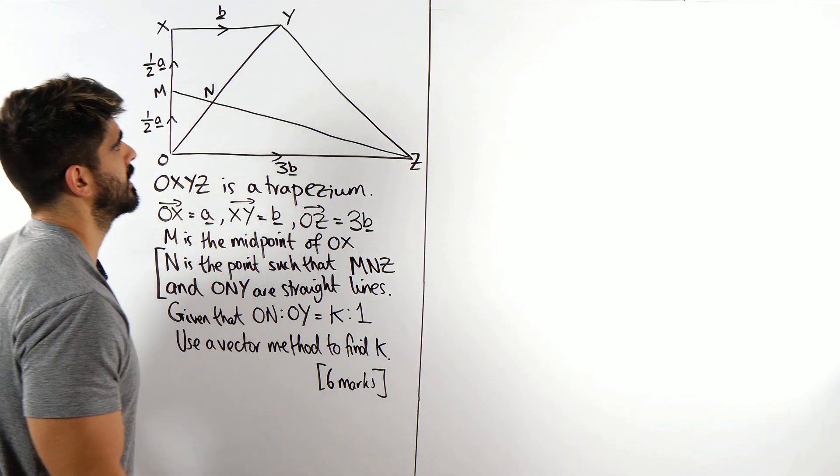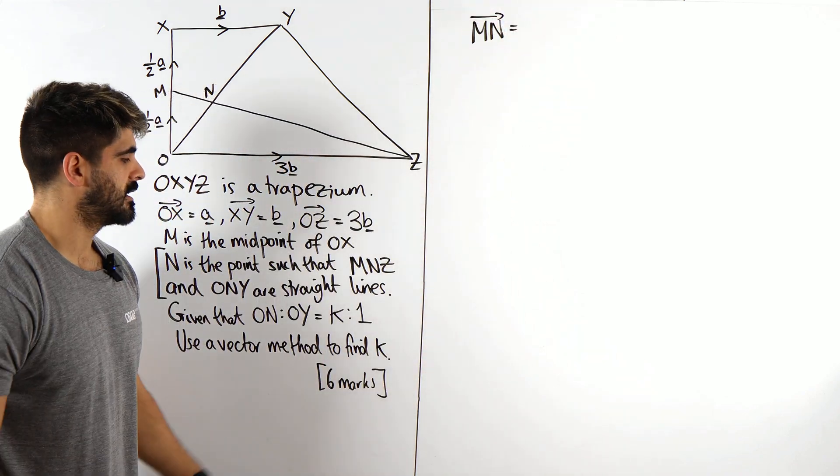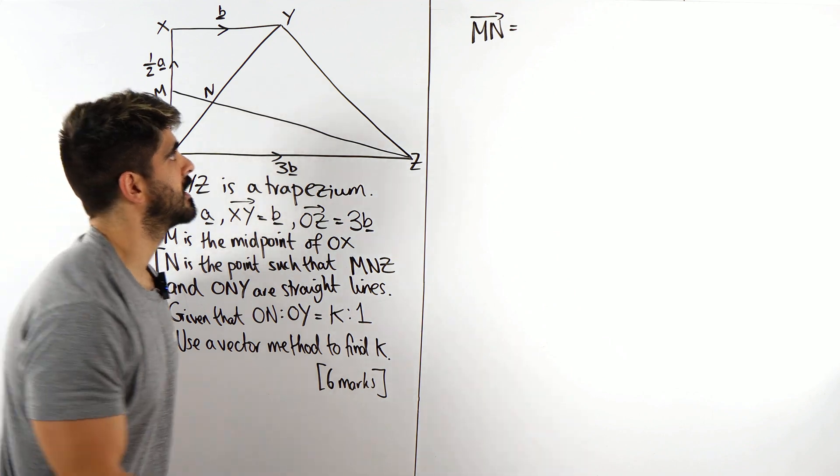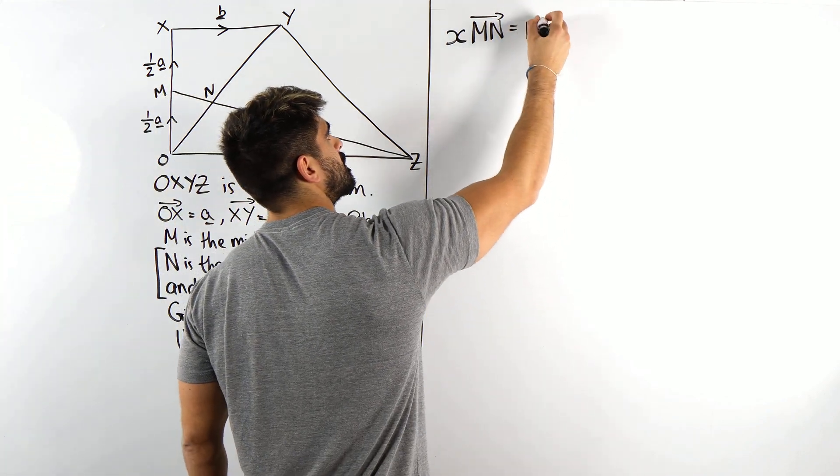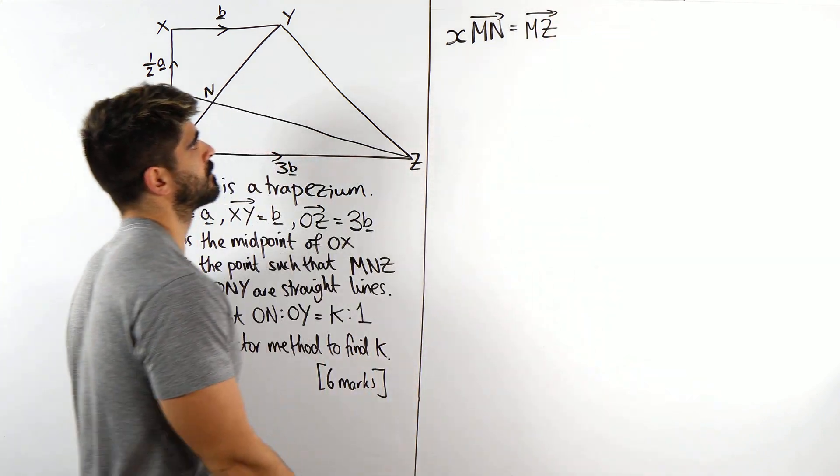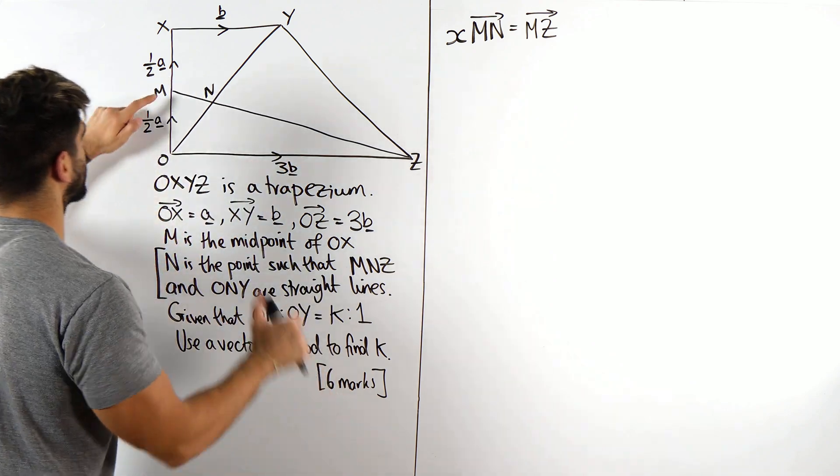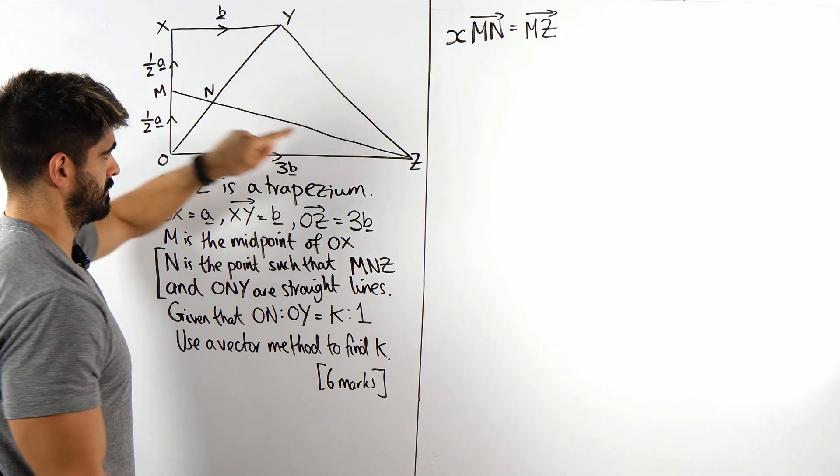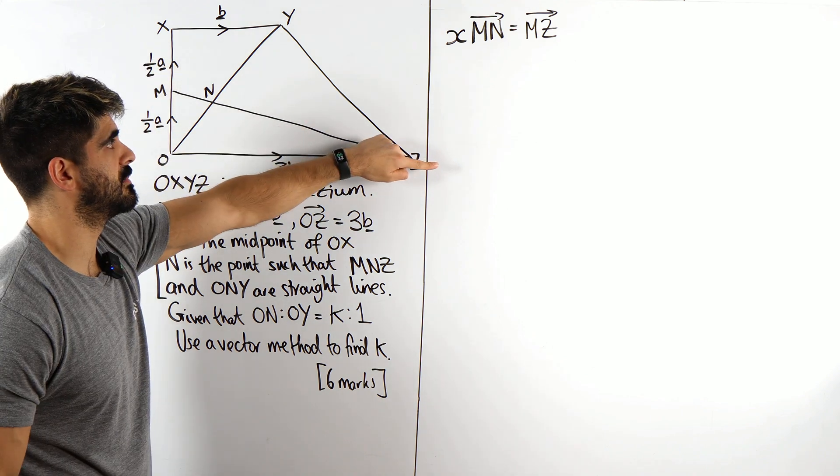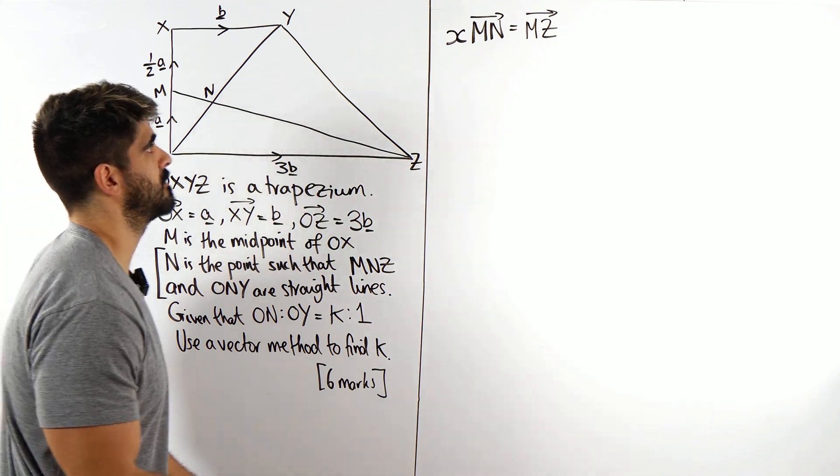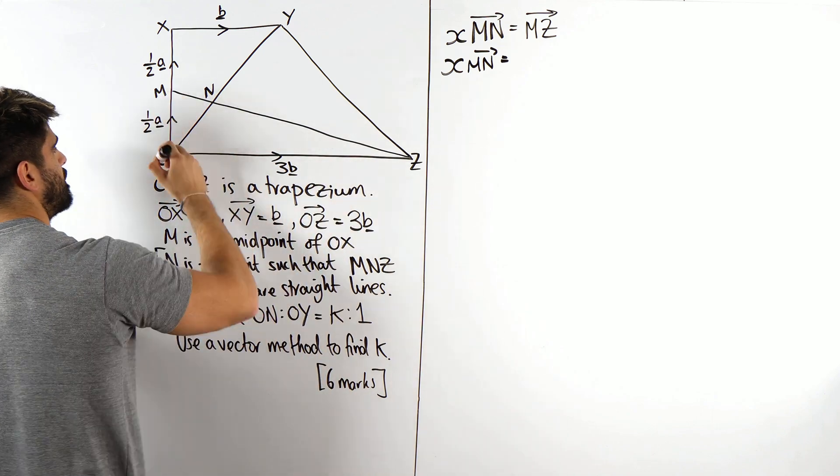So MN, if I multiply it by something, now they've used K, should we use X? If I take MN and multiply it by X, it's going to give me MZ. Now from there, that's literally going to form our whole working out. Just this statement right here. I can work out what MZ is straight away. To go from M to Z, I'm going negative half A, I'm going against the arrow, negative half A plus 3B. Or 3B minus a half A. So X MN is, I'm going to write 3B and minus a half A.